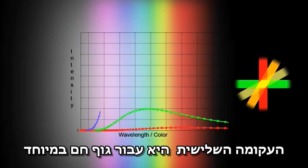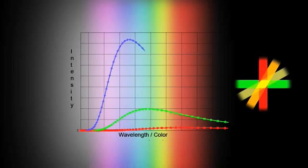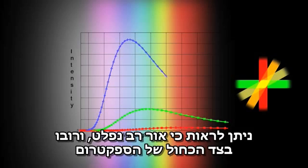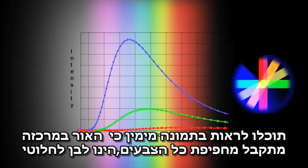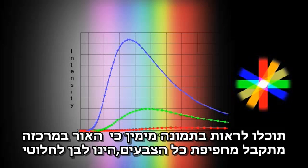This third curve is for a really hot object. Lots of light, and with most of it being emitted toward the blue end of the spectrum. And, as you can see, our cauldron now is pure white in the center where all the colors overlap.